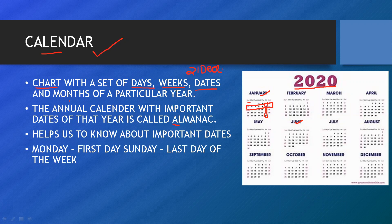As the name of the chapter suggests, Almanac means the annual calendar with important dates of that year. Suppose our Indian Independence Day is on 15th August, so I will mark 15th August. Republic Day is on 26th January. Like that, if you mark different important dates on the chart, it is called an Almanac.